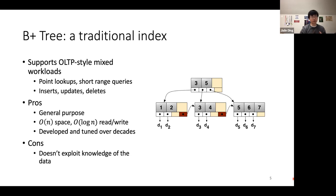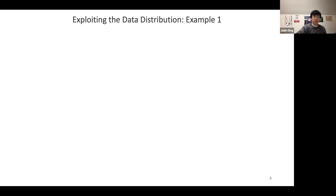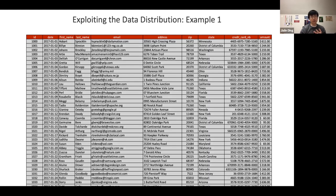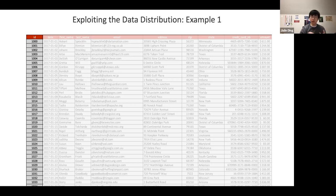One downside to the B+ tree is that it doesn't exploit knowledge of the data it's indexing, which can leave performance on the table. For example, if we have a table with an order ID column containing consecutive integers starting from 1000 — very likely auto-generated and auto-incrementing — we can use this observation to efficiently perform lookups by ID. Given an ID, we simply look in row number ID minus 1000, so for ID 1100 we look in row 100 assuming zero indexing.